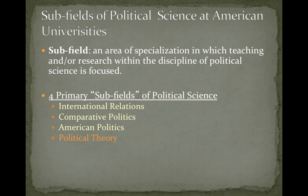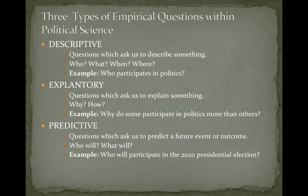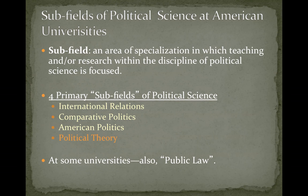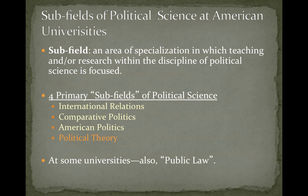And then you have political theory, which we'll lay out today — it has a different focus that many people gravitate toward. At some schools, you'll also have a branch called public law, focusing specifically on law, society, and the judicial branch. At other universities, this is subsumed under American politics. That gives you the lay of the land in terms of how political science is structured as a discipline.